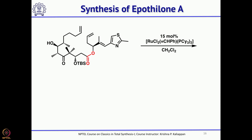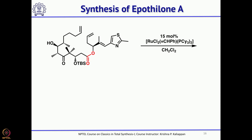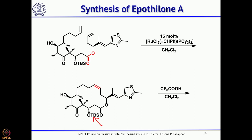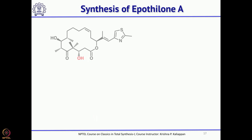Once that precursor was assembled, Grubbs first generation catalyst performed ring-closing metathesis to give the product containing the double bond. At this stage, removal of the TBS group followed by epoxidation was needed. The TBS group was removed using trifluoroacetic acid, then epoxidation with MCPBA gave Epothilone A.